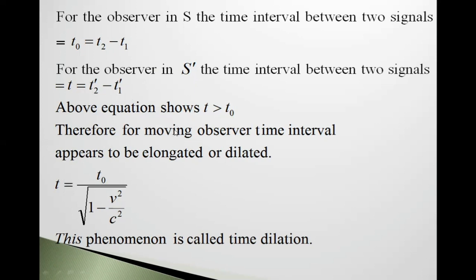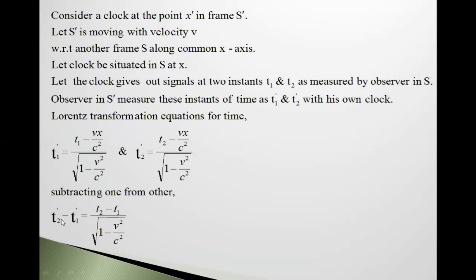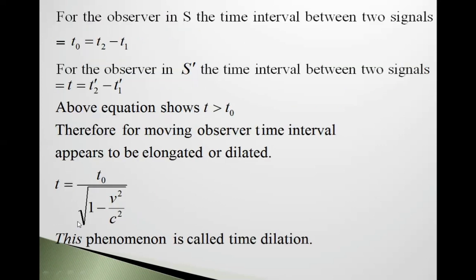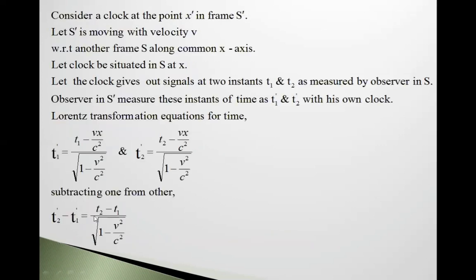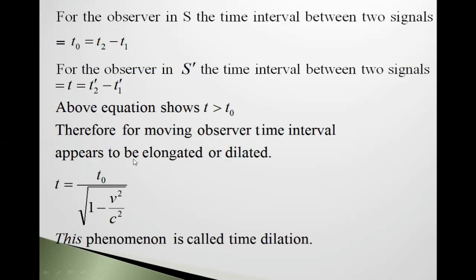Now see here, T equals T₀ divided by this factor. So if this factor is less than one, then this becomes larger. This T2' minus T1', means T, can equal 2T₀ for example, meaning T is greater than T₀.